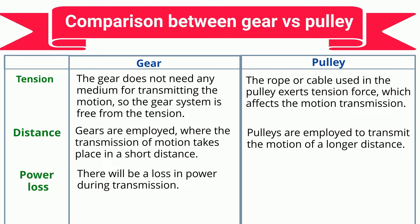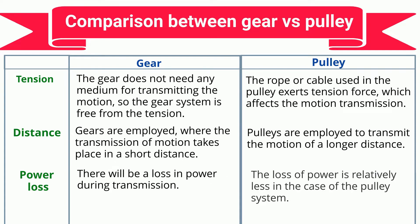Power loss: There will be a loss in power during motion transmission. The loss of power is relatively less in the case of the gear system compared to the pulley system.